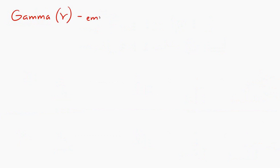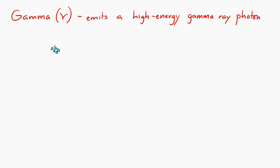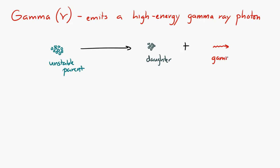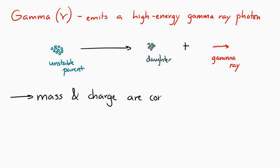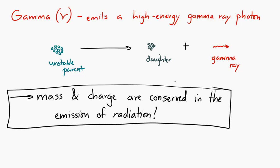Gamma radiation is when the unstable nucleus emits a high-energy gamma ray photon. So a parent nucleus that's unstable decays into a more stable daughter nucleus by emitting a gamma ray photon. In every case, mass and charge must be conserved — there's a slight nuance we'll see later, but for now we consider mass and charge to be conserved. Because of these conservation laws, we can write down radioactive decay equations — or reactions, since there's an arrow rather than an equal sign.